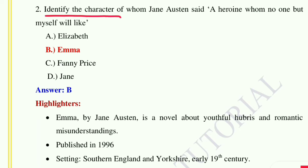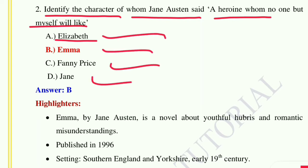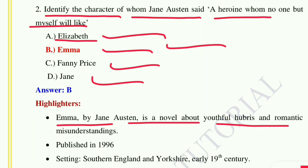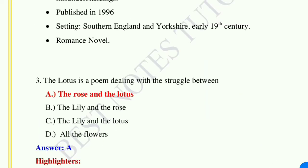Question number two: Identify the character of whom Jane Austen said 'a heroine whom no one but myself will like' — option A: Elizabeth, option B: Emma, option C: Fanny Price, option D: Jane. The answer is option B, Emma. Emma by Jane Austen is a novel about youthful hubris and romantic misunderstandings, published in 1815, set in Southern England during the early 19th century. It is a romantic novel.